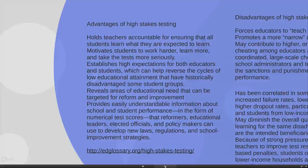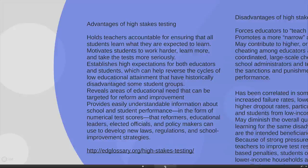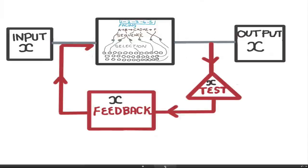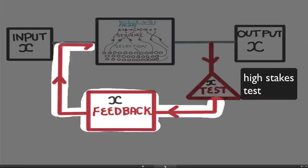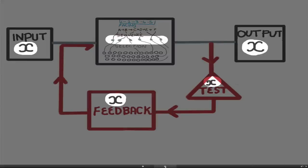The last advantage: it provides easily understandable information about schools and student performance in the form of numerical test scores. Because it's standardized and there's only one test for everyone, you can compare different schools, different communities, different minority groups, and start to name and shame — praise those doing well and punish those doing badly. High stakes testing has a feedback loop: you take the information, feed it back into the system and try to improve things. But notice this is a forced feedback loop — you use one assessment to drive the feedback mechanism to make sure everyone is doing the same thing, but doing it properly.